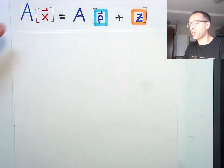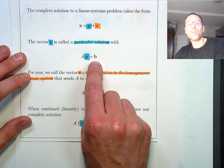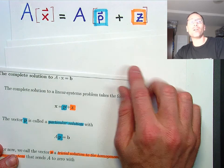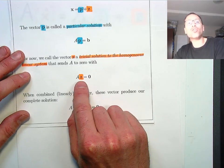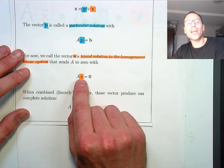Remember, a particular solution, the whole idea of a particular solution is it solves the linear systems problem. So A times p is for sure equal to b. And then the whole idea of a trivial solution, or as this is a zero solution z, A times z will get sent to zero.